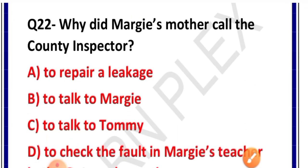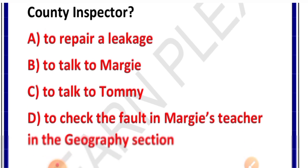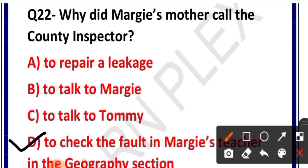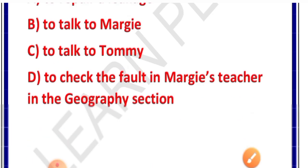Question number 22: Why did Margie's mother call the county inspector? Options: to repair a leak, to talk to Margie, to talk to Tommy, or to check the fault in Margie's teacher in the geography section. Correct answer is option D. Margie ka jo robot teacher tha, uske andar geography section mein fault aa gayi thi, use check karne ke liye Margie ki mother ne county inspector ko bulaya tha.